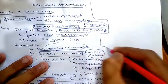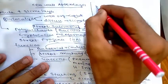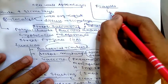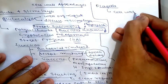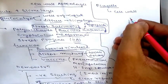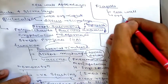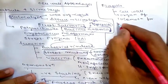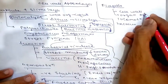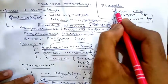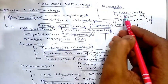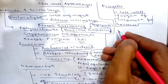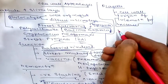Next we discuss flagella. Flagella are thread-like appendages protruding from the cell that confer motility to bacteria — they are known as the organ of locomotion. They measure 5 to 20 micrometers in length and 0.01 to 0.02 micrometers in thickness.